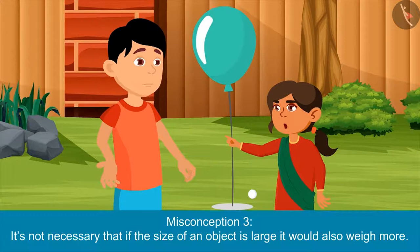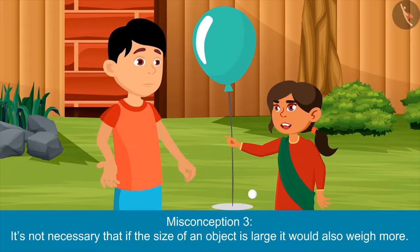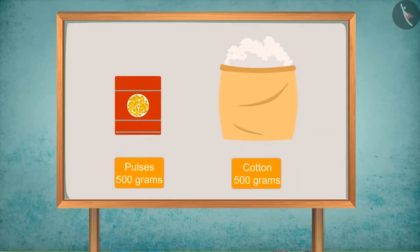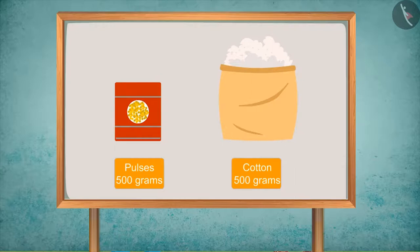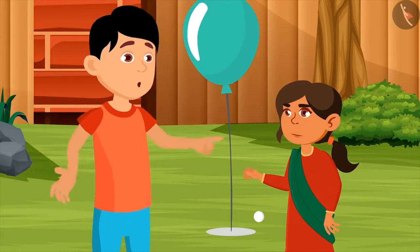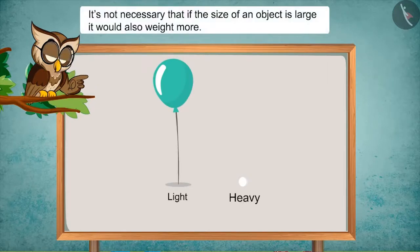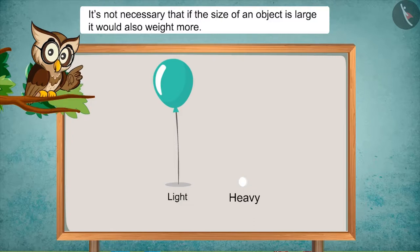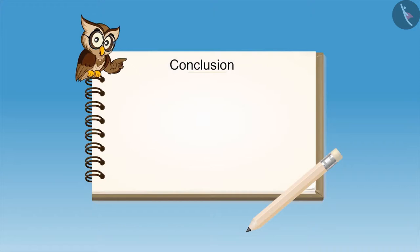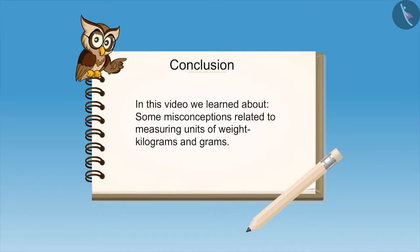Yes brother, the balloon is so light! Just now we have seen how a large quantity of cotton was equal to the weight of a comparatively less quantity of pulses. Kids, always remember: the weight of an object doesn't depend upon how big or small it is — it depends upon the heaviness of an object. So kids, in this video we learned about some misconceptions related to measuring units of weight, kilograms and grams.